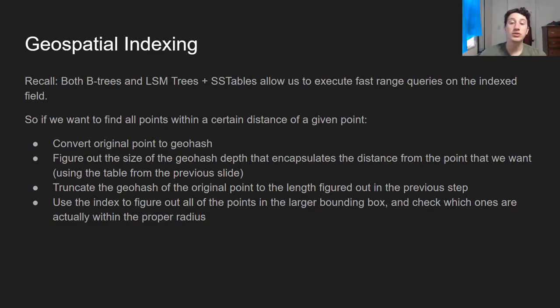This is the entire process of geospatial indexing. Recall that both B-trees and LSM trees with SS tables allow us to execute really fast range queries based on an index field. Imagine the index field is going to be a geohash. It means that geohashes that are next to each other are probably going to be very close to one another in proximity in the actual world, if they're next to one another in the index.